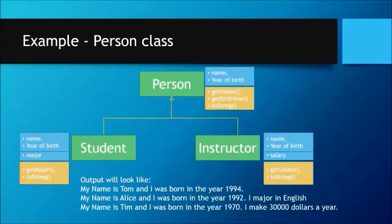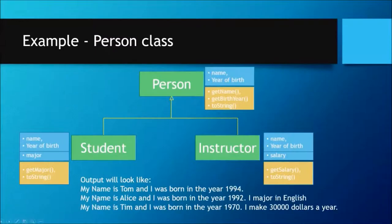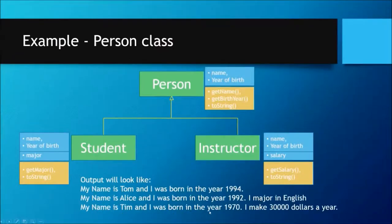When you run your program, the output should look like this. For the Person class: 'My name is Alice. I was born in year 1994.' For the Student: 'My name is Alice. I was born in year 1992. I majored in English.' — with name, year of birth, and major. For the Instructor: 'My name is Tim. I was born in year 1970. I make $30,000 a year.' — with name, year of birth, and salary.